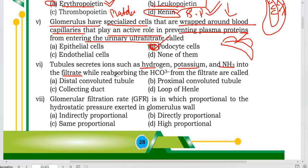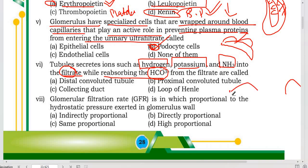Some tubules secrete hydrogen ions, potassium ions, and ammonium ions into the filtrate while reabsorbing bicarbonate ions. This process occurs in tubular secretion, mainly in the proximal convoluted tubule, and to a lesser extent in the distal convoluted tubule. So the correct answer is the proximal convoluted tubule.